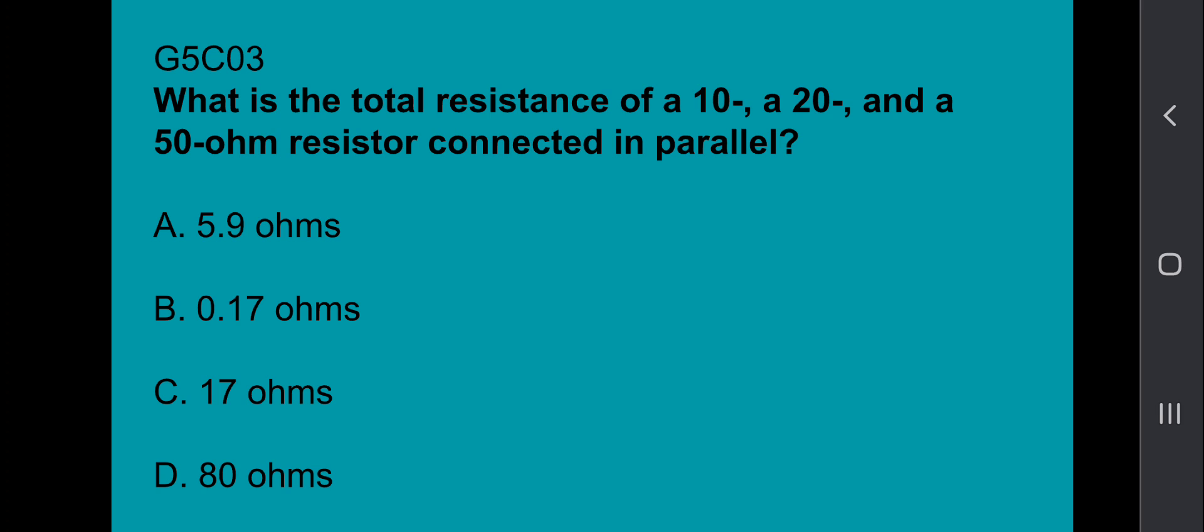G5C03: What is the total resistance of a 10, a 20, and a 50-ohm resistor connected in parallel? That's 5.9 ohms.